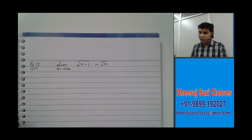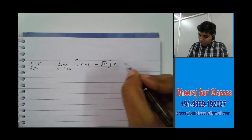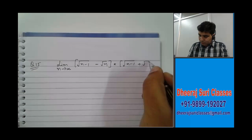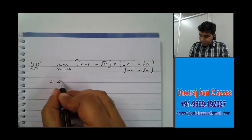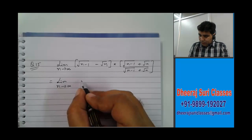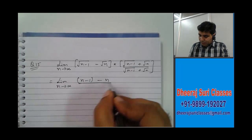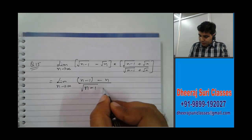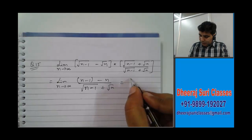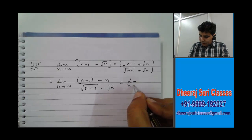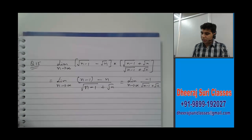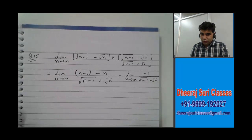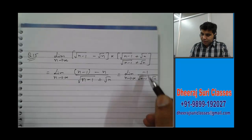First of all we'll rationalize this numerator — multiply and divide by root(n−1) plus root(n). So we obtain: limit as n goes to infinity of (n−1 minus n) divided by (root(n−1) plus root(n)). That gives us: limit as n goes to infinity of minus 1 upon (under root(n−1) plus under root(n)). Now as n approaches infinity, something divided by infinity has to be 0.